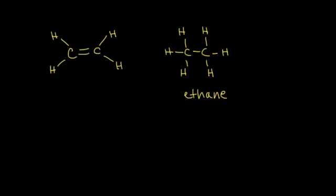You can see the A-N-E ending for an alkane, with 'eth' as the root since there are two carbons. If we look at this two-carbon alkene on the left, the root is also 'eth.' But since it's an alkene, not an alkane, instead of an A-N-E ending, it gets an E-N-E ending. So this molecule is ethene.